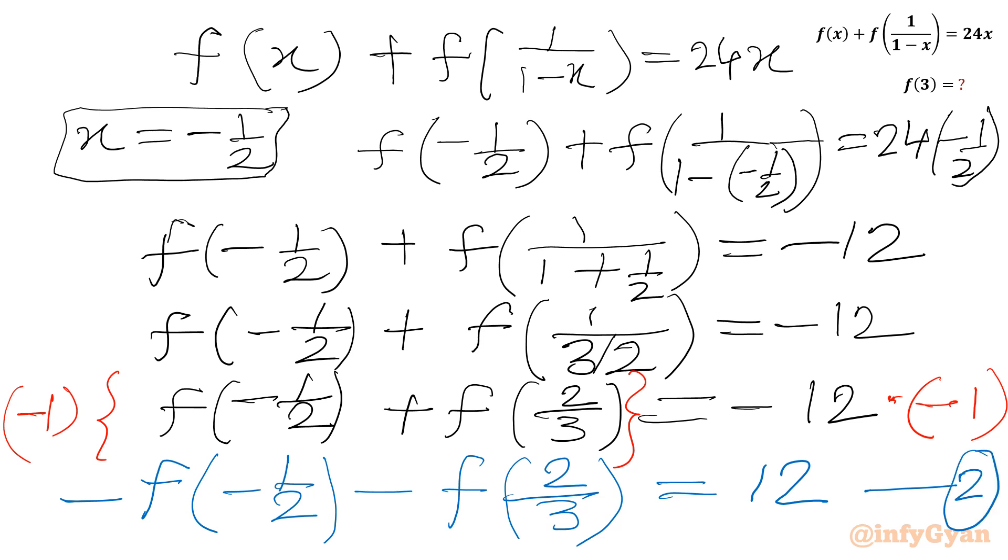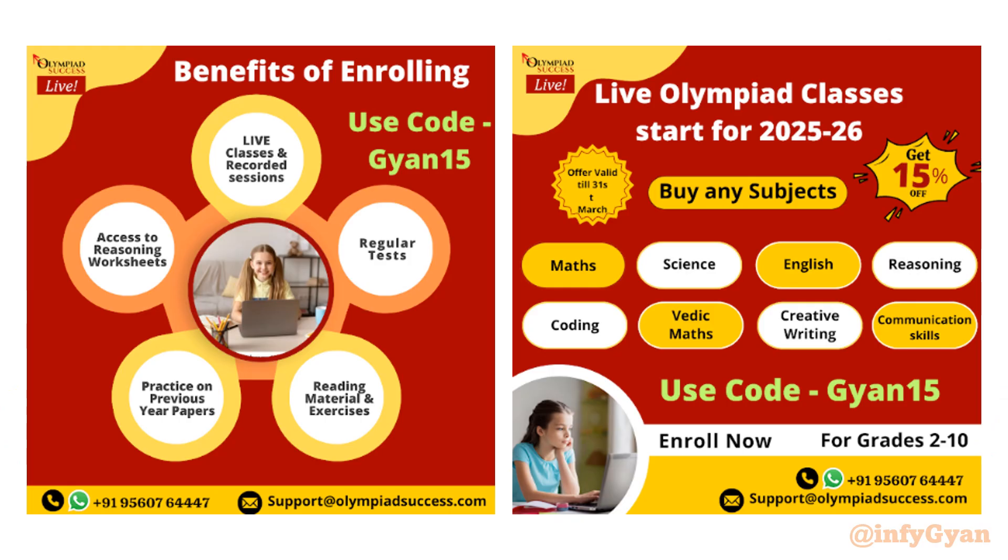Now I will consider third substitution. But before that friends, if you are an Olympiad aspirant or planning to do preparation for SOF, Crest, Unicus, Silverzone, Asset, Indian Talent Olympiad, Hummingbird from grade 2 to grade 10, then Olympiad Success offers you live interactive sessions, PYQs, tests and many more. Please check out the description box for further details and use referral code GYAN15 to get 15% discount. Let us come back to our problem.